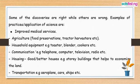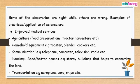Some of these discoveries are right, while others may have been misapplied. Examples of good practices and applications of science include improved medical services, agriculture as it relates to food preservation, tractor harvesters, and the development of improved species that are resistant to diseases. In household equipment, we have the toaster, the blender, the cookers, the microwave, the vacuum cleaners, and so on. All these equipments make household work easier.